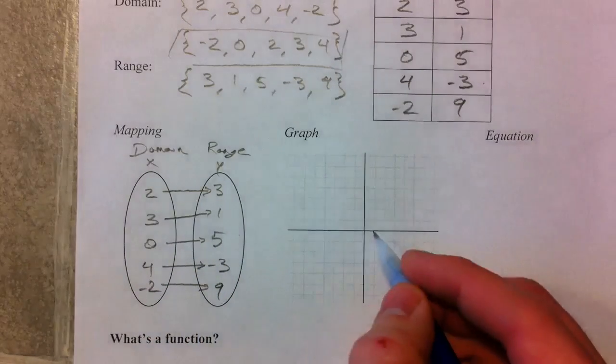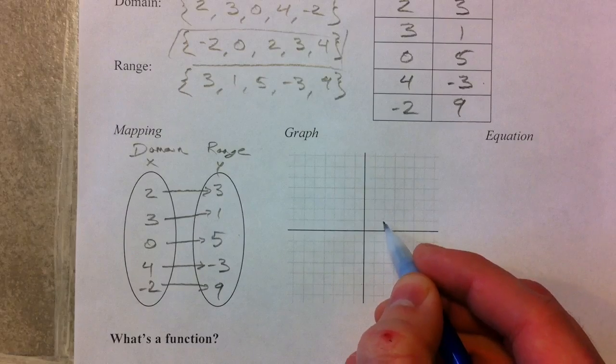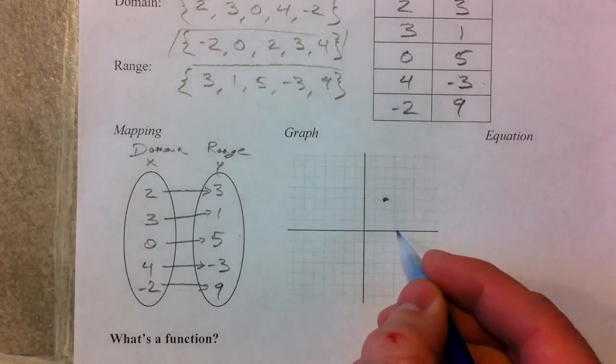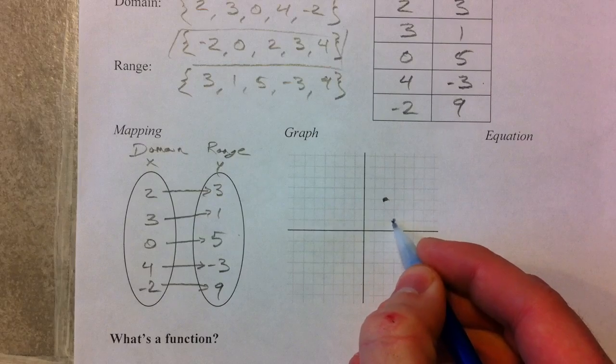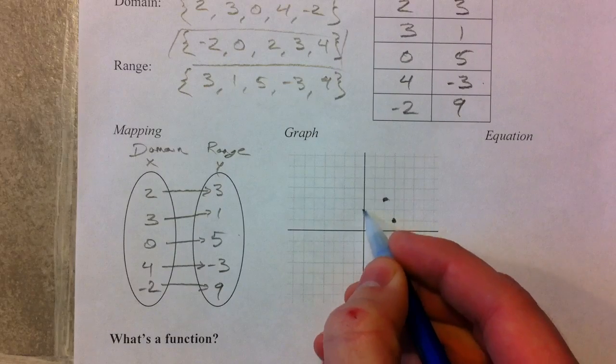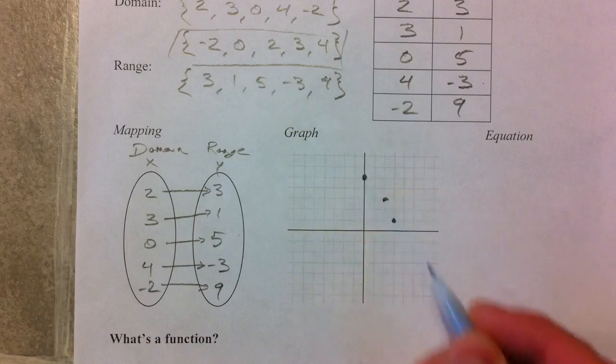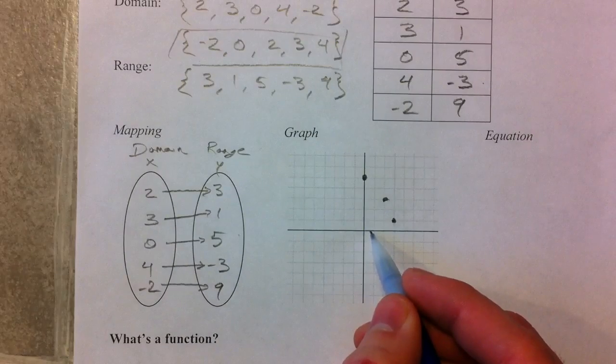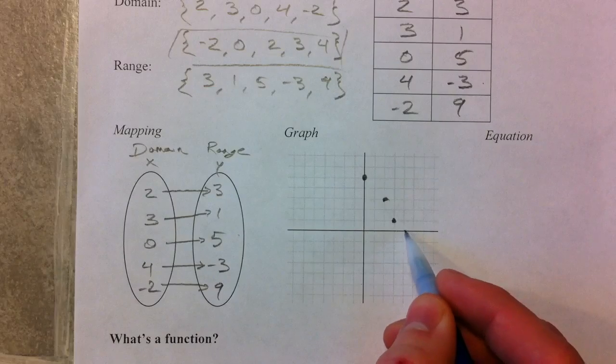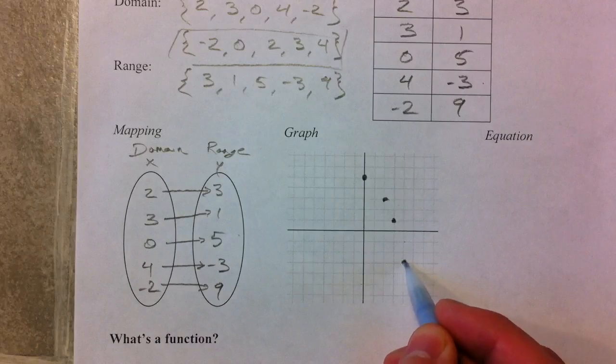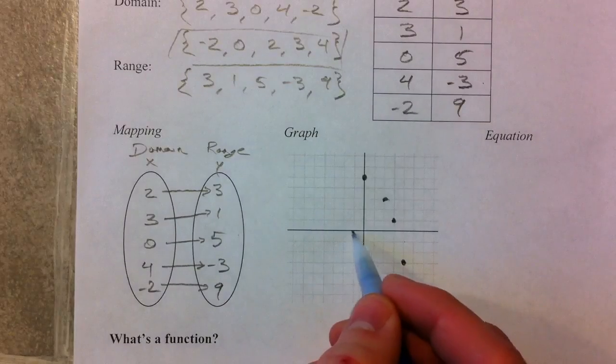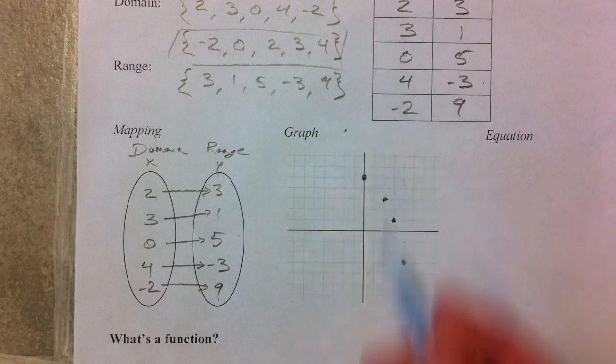And we can also plot these points in a graph. 2, 3, 3 to the right, up 1, 0, 1, 2, 3, 4, 5, 4, negative 3, and negative 2, 9 would be off a little bit up here.